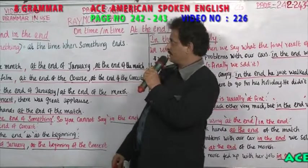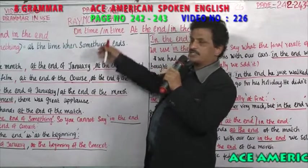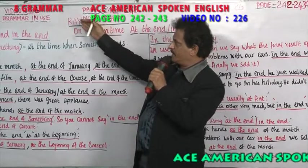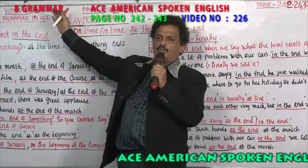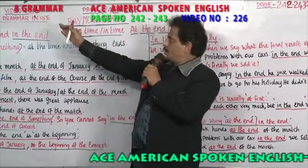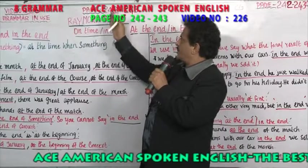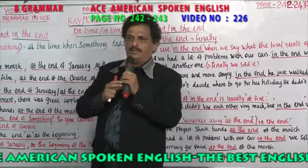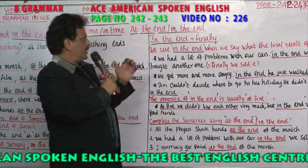Dear friends, welcome to AS American English Center. Take a Raymond Murphy's English Grammar in Use. We have come to video number 226, game number 242 and 243. Cambridge University Press.